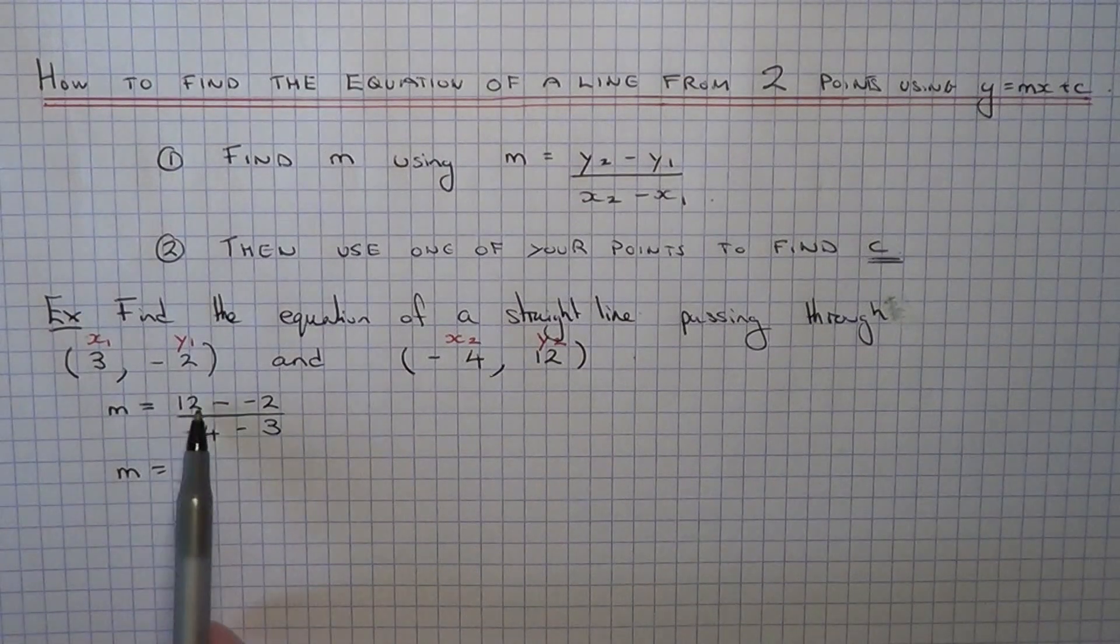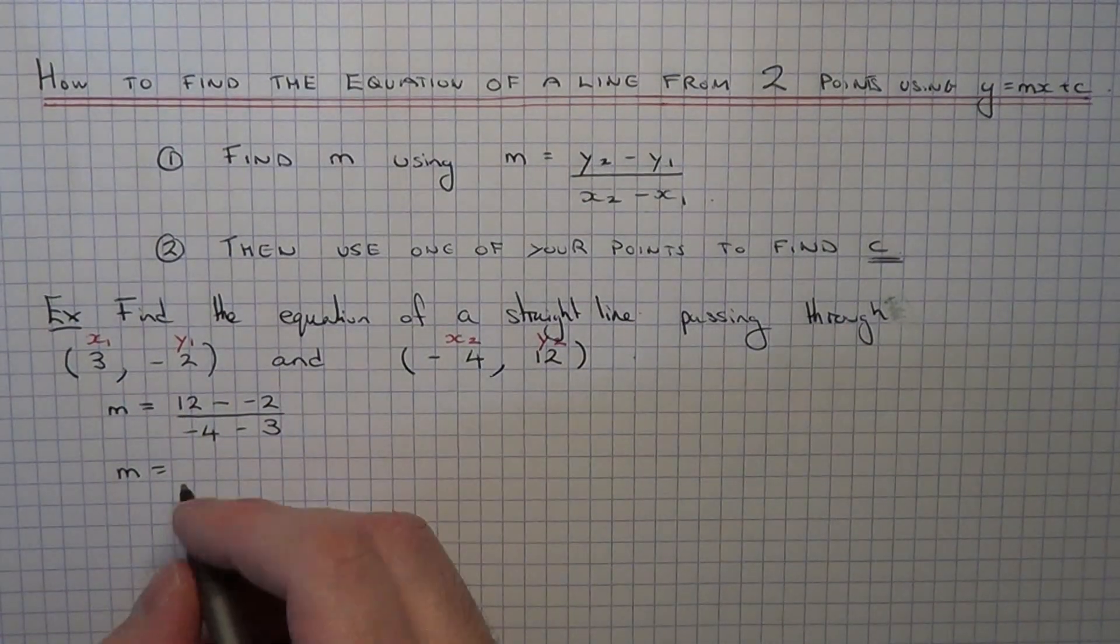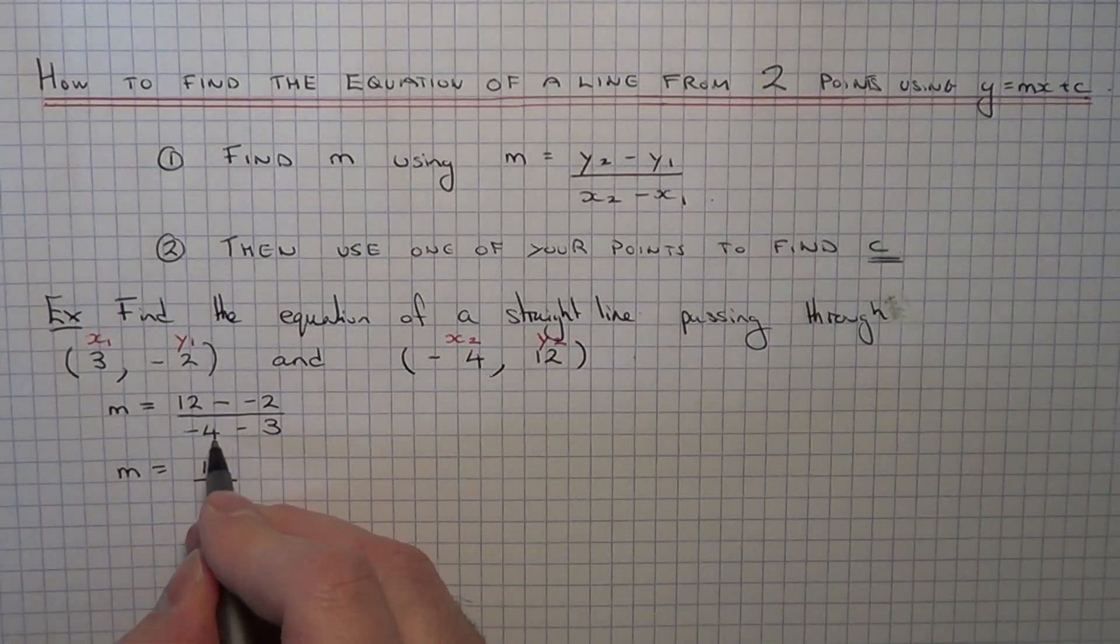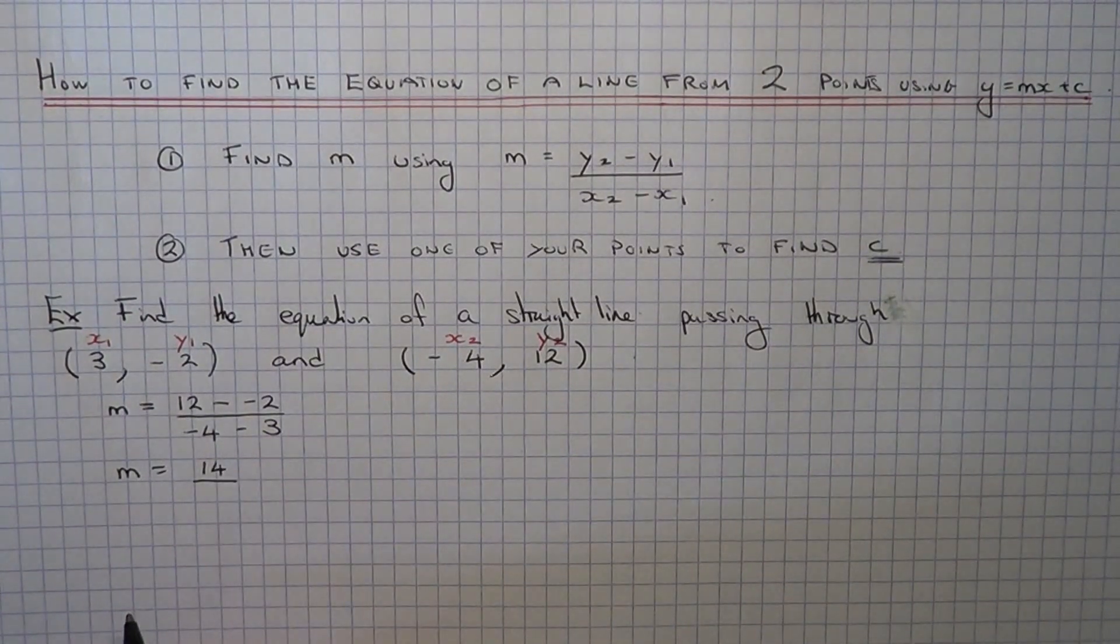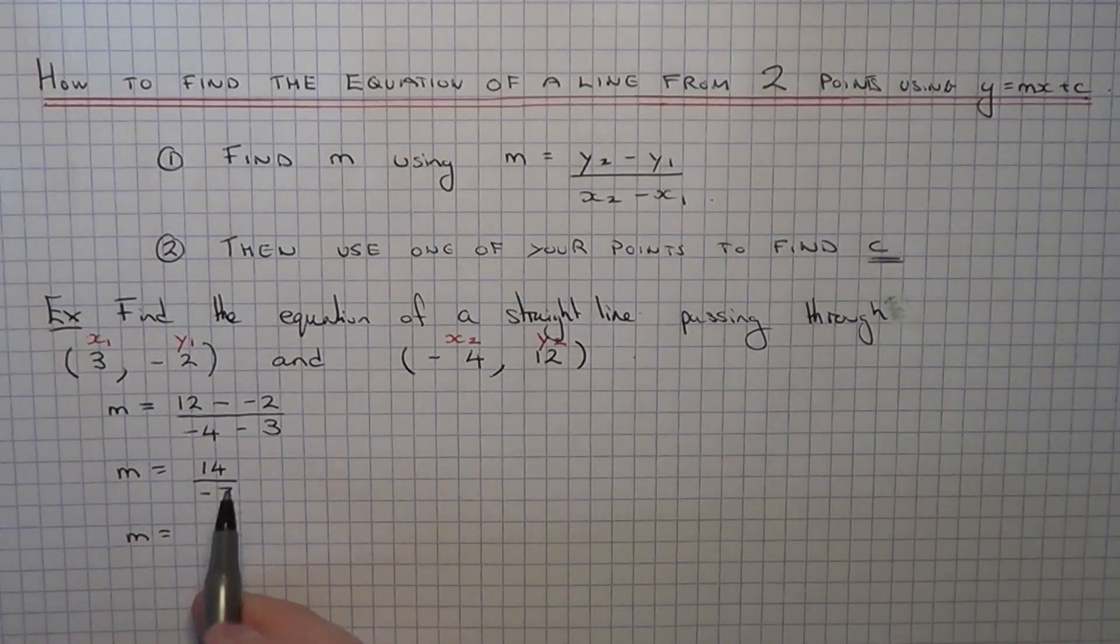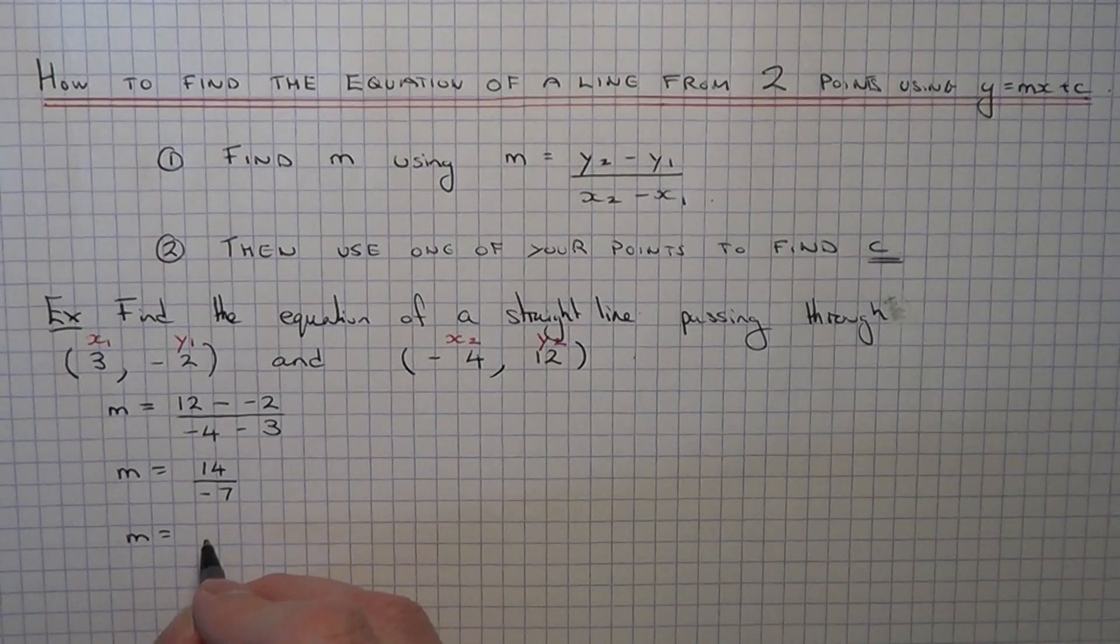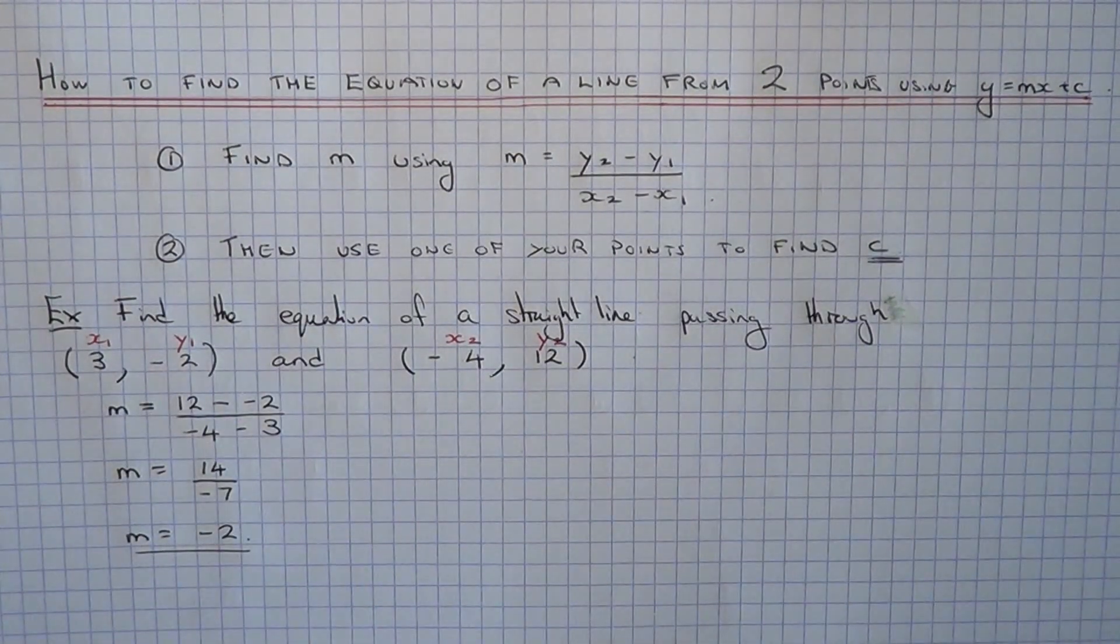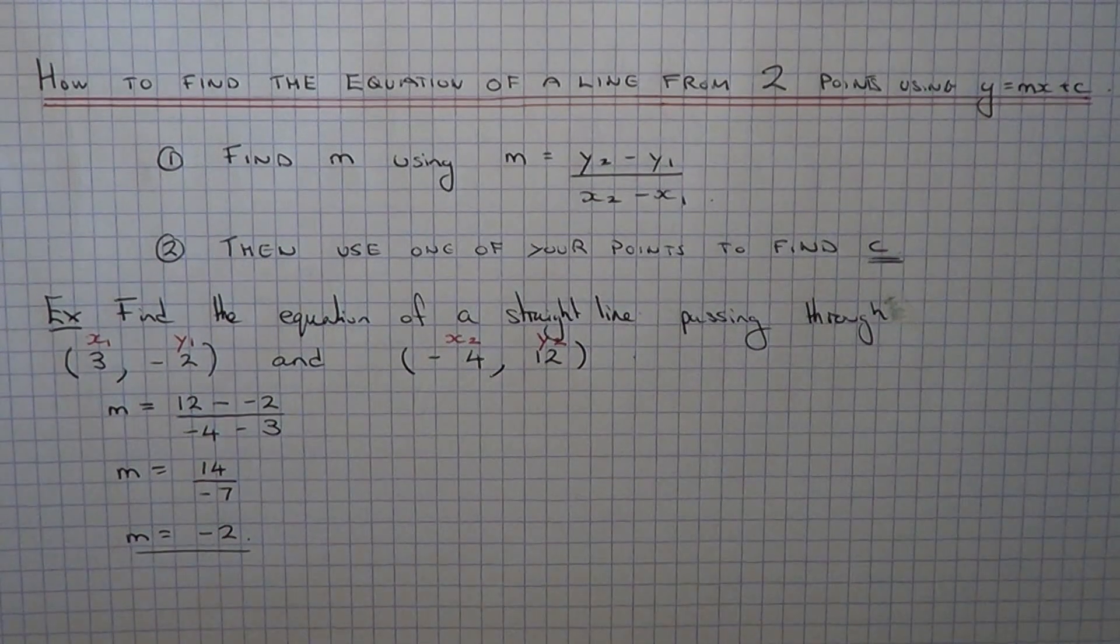So 12 take away minus 2, well that will be 12 plus 2 which is 14. And on the bottom minus 4 take away 3 is minus 7. So 14 divided by minus 7 will give minus 2. So that is our gradient of our straight line.